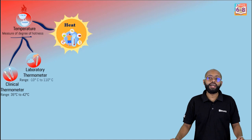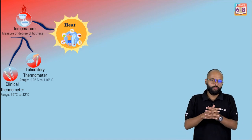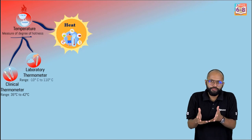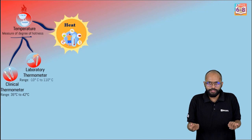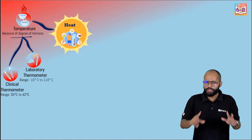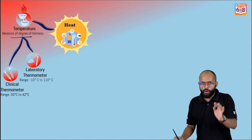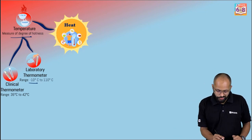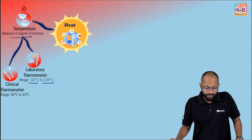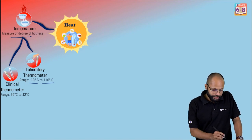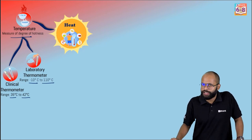After temperature, we moved towards devices used to measure temperature. Once you understand the quantity you want, you need the device that will tell you that quantity. We learned two thermometers: one was the laboratory thermometer — its range is minus 10 degrees Celsius to 110 degrees Celsius — and the other was the clinical thermometer, with a range of 35 degrees Celsius to 42 degrees Celsius.